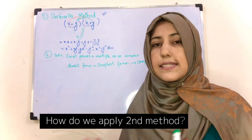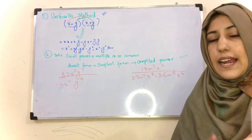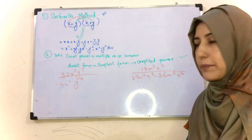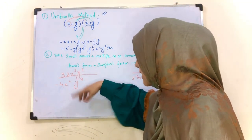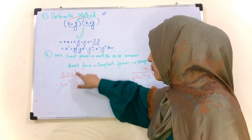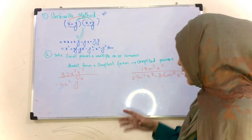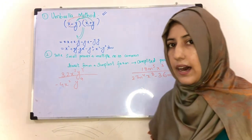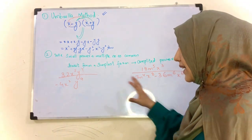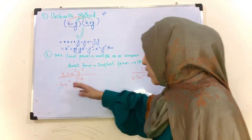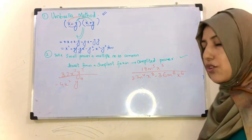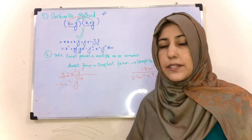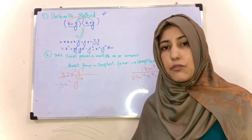Second method ko explain karne ke liye maine do examples likhi hain. Aap dono examples dekh lein - yahan pe kuch x ki power bhi complicated ho rahi hai aur y ki bhi power complicated ho rahi hai, yahan pe bhi numbers aur powers bhi complicated aa rahi hain. To is tarah ki expressions jahan pe powers bhi complicated hon aur multiples bhi complicated hon to hum second method ko apply karte hain.